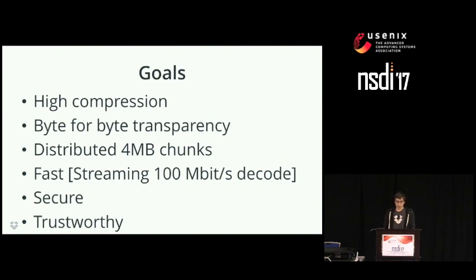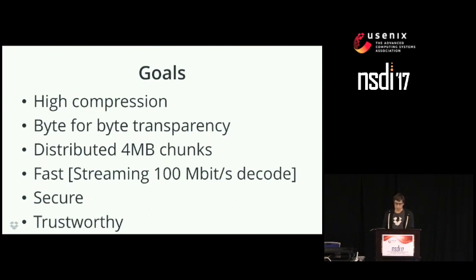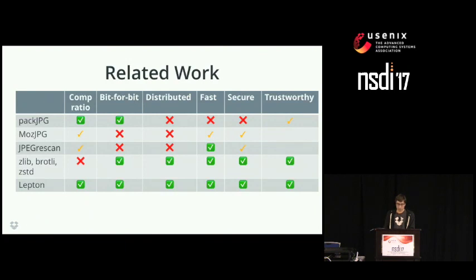It needs to be secure so that even a maliciously formed JPEG doesn't cause harm to the systems running it, and it also needs to be trustworthy — we need to make sure that the data can be reconstructed every single time. However, media doesn't compress well with generic techniques like Zlib, Brotli, or Zstandard. The average savings for those techniques is about 1%. To compress JPEGs well, we needed a solution that actually understood the media files.